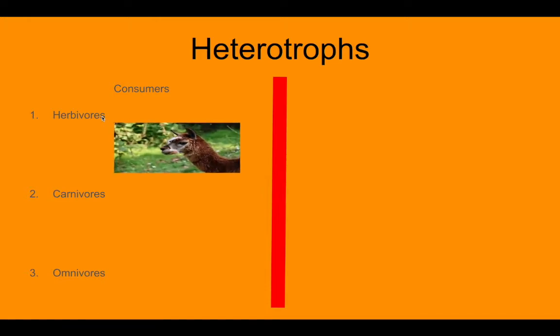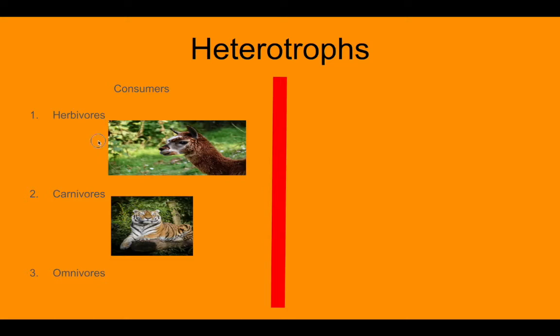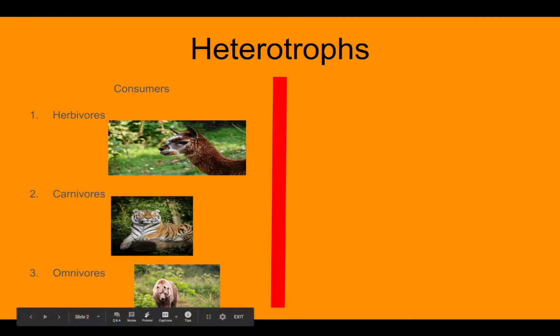We got herbivores like this llama. We have carnivores like this tiger. And we have omnivores. So herbivores will only eat plants. Carnivores would only eat meat. And omnivores can actually eat both. We are actually also known as omnivores because we eat meat or plant-based diets.